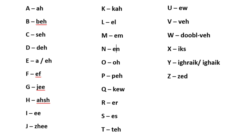A letter A is 'a', B is 'bay', C is 'say', D is 'day', E is 'e', and then 'a' and 'a' both.